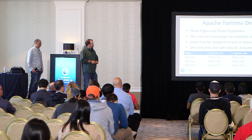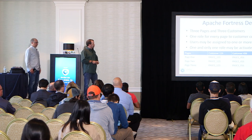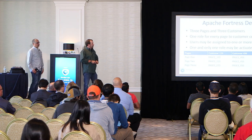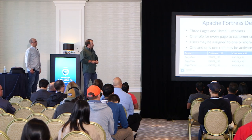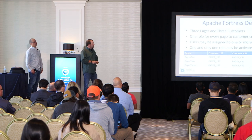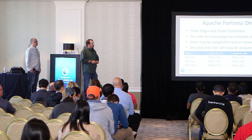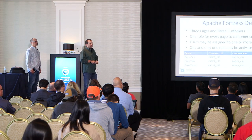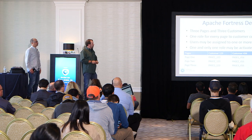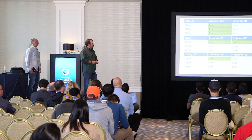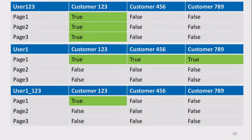There are three pages, three customers, and nine application roles. Furthermore, we set up a dynamic separation of duty constraint to say one and only one of those roles may be active in the session at a time. We're able to do very fine-grained control of what page-customer combination can be accessed via the security system.